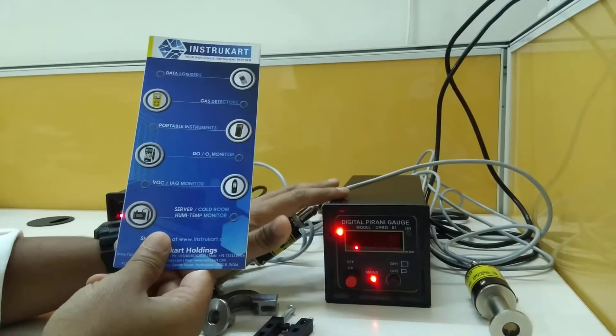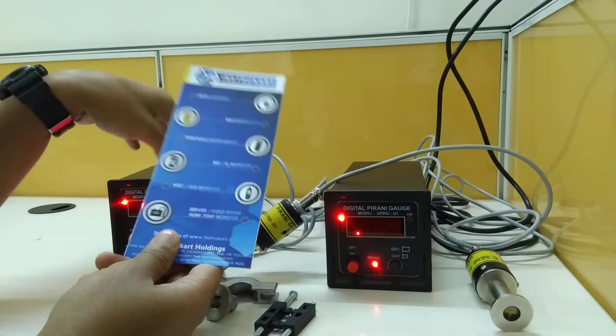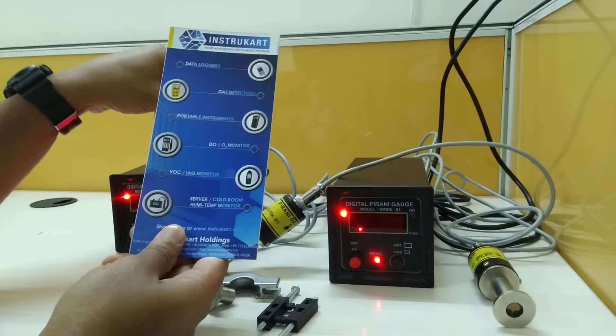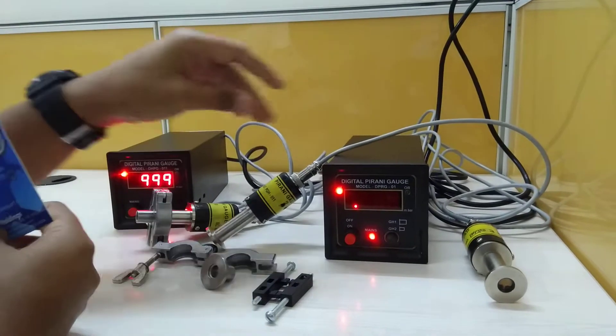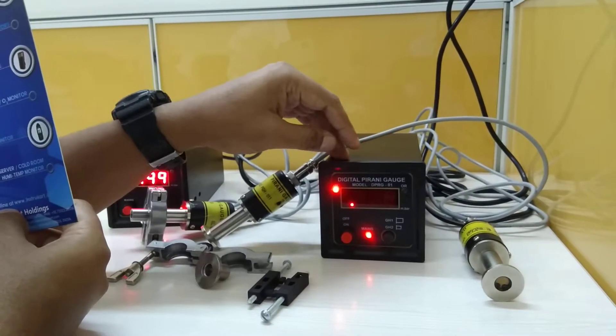We also have one more Pirani gauge with a set point controller. So altogether we have three models of Pirani gauge: the single and dual head gauges you can see here, and the other one with a set point controller.